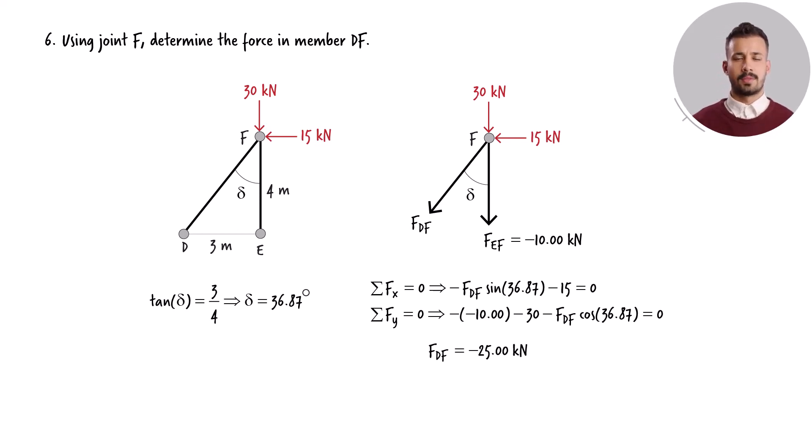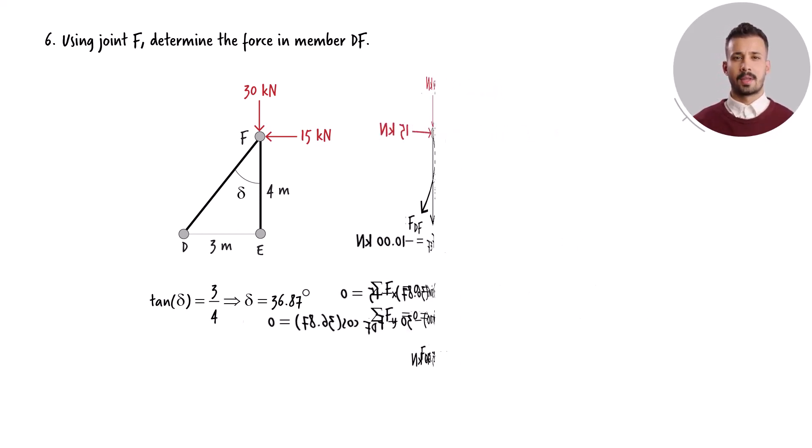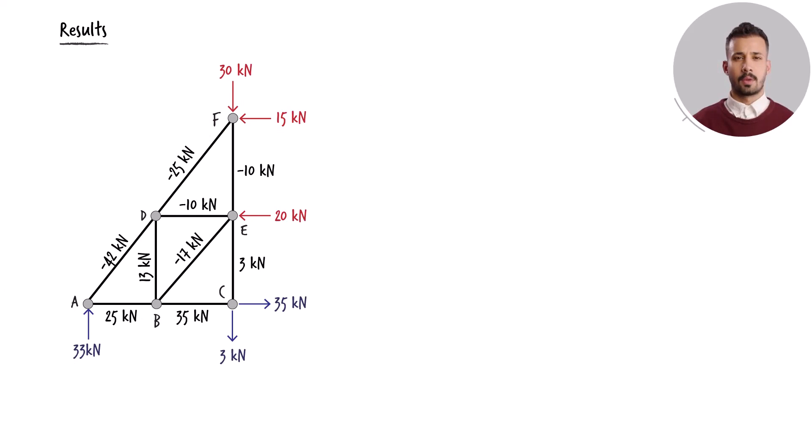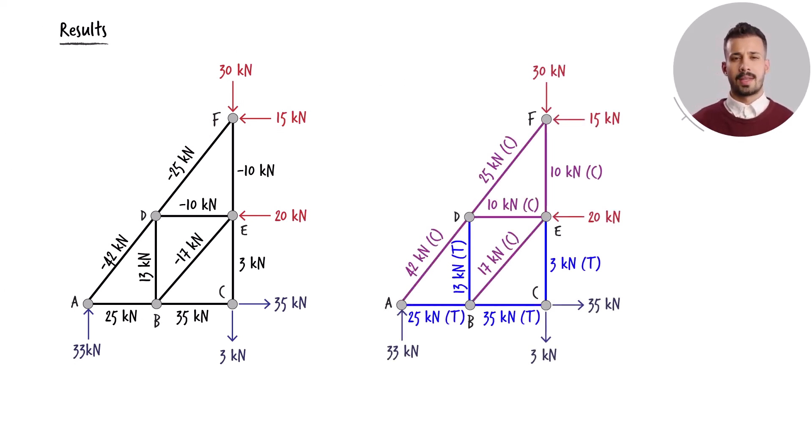To summarize the results of the analysis, we can annotate each member with its corresponding calculated force magnitude. Alternatively, we can summarize the results by writing the letter C to indicate compression, or the letter T to signify tension next to each force magnitude. Thank you.